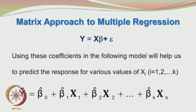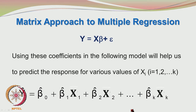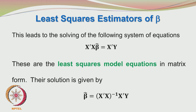Using the estimated coefficients allows us to predict the response at various values of Xi. Knocking off the error component, the prediction equation is Y-hat equals beta-hat0 plus beta-hat1·X1 plus beta-hat2·X2 up to beta-hat_k·Xk, with k regression parameters and beta-hat0 as the intercept in the multidimensional space. To find the least squares estimators for beta, we solve the equation: beta-hat equals (X'X)-inverse times X'Y.